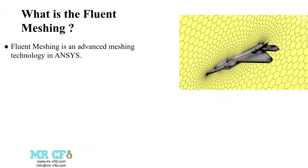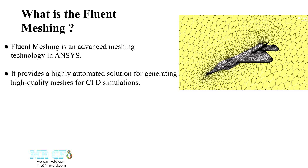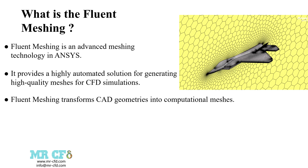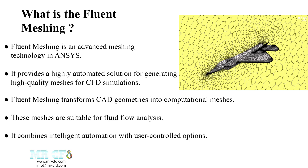Fluent Meshing is an advanced meshing technology within ANSYS that provides a highly automated solution for generating high-quality meshes for Computational Fluid Dynamics simulations. It transforms CAD geometries into computational meshes suitable for fluid flow analysis by combining intelligent automation with user-controlled options.